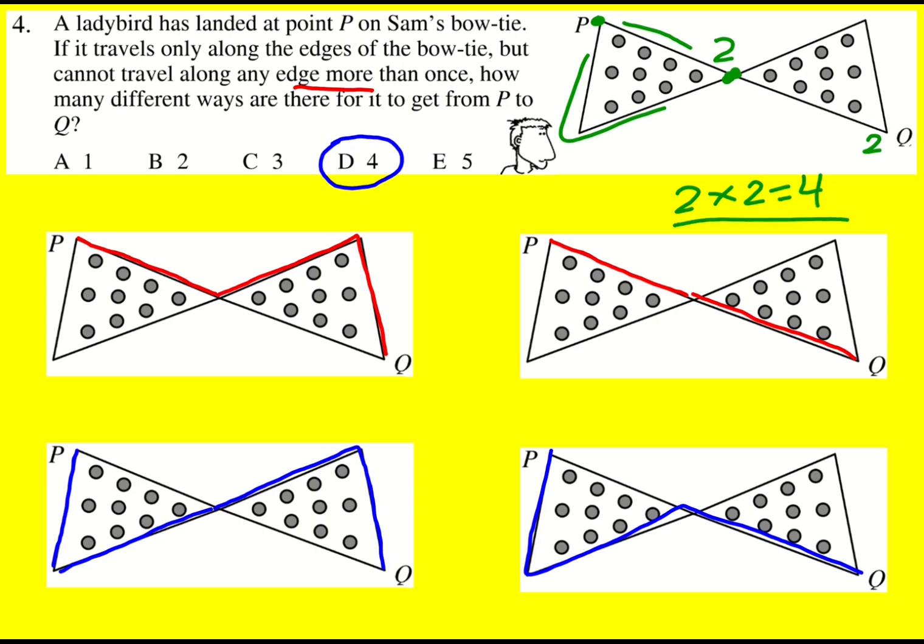This sort of calculation really comes into its own when there's many more routes to consider and it just starts getting a bit too complicated to write them all down.